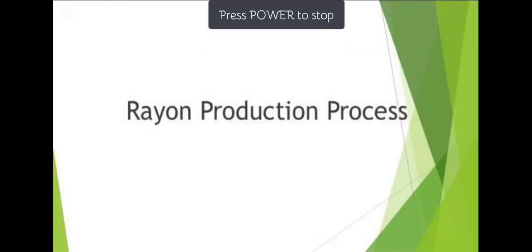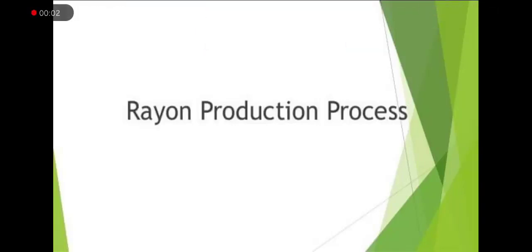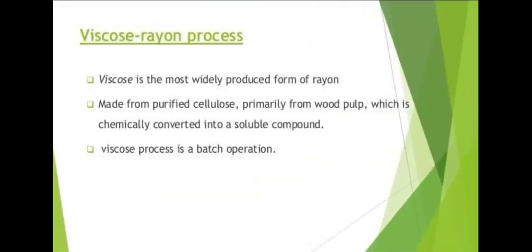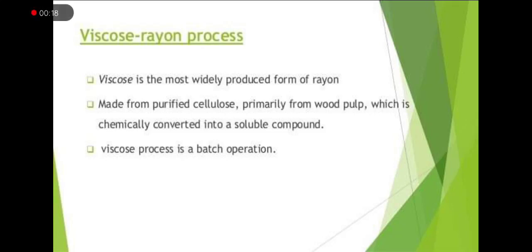Hello there, my dear and bright students. Today we will talk about rayon and the production of rayon. Viscose rayon is the most widely produced type of rayon in the world, made from purified cellulose, primarily from wood pulp, which is chemically converted into a soluble compound.